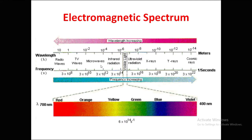Microwaves span wavelengths from 10⁻² to 10⁻⁴ meters, with frequencies from 3×10¹⁰ to 3×10¹² Hz. Infrared radiation ranges from 10⁻⁴ to 10⁻⁶ meters in wavelength, with frequencies from 3×10¹² to 3×10¹⁴ Hz. After infrared comes visible light, which spans from 700 nanometers down to 400 nanometers and is divided into various colors.